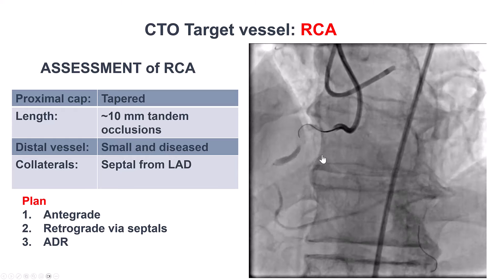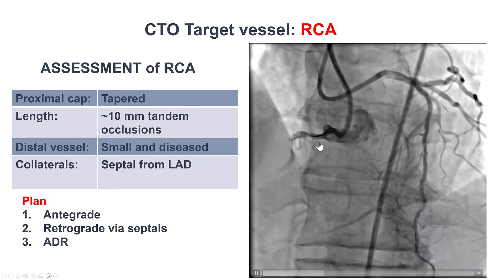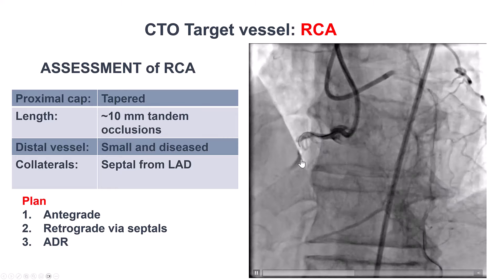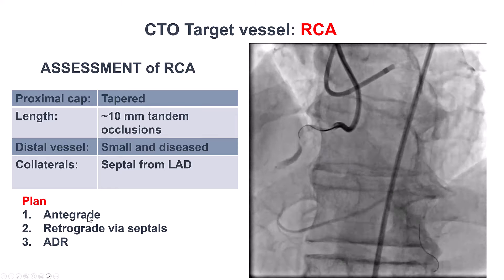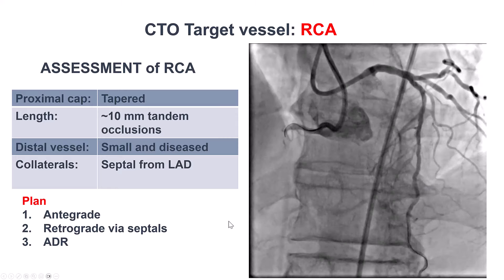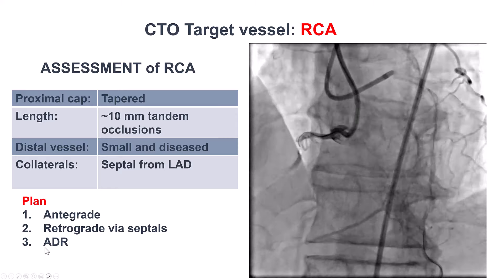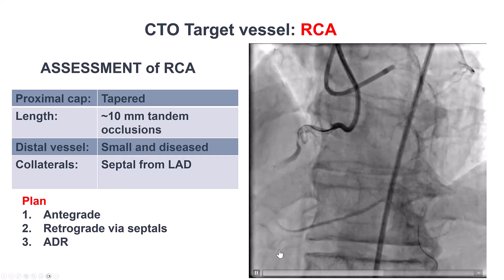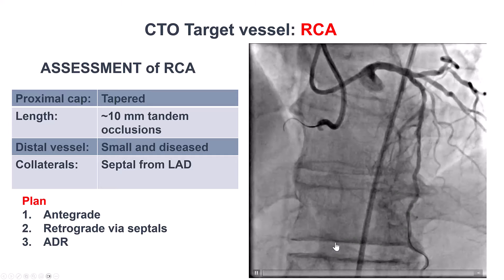There were some collaterals that were coming from the LAD. So our plan here was to try antegrade wiring given the short length of the occlusion, and if that didn't work, go retrograde from the septals, leaving ADR as the last option because of the relatively small size of the distal vessel.